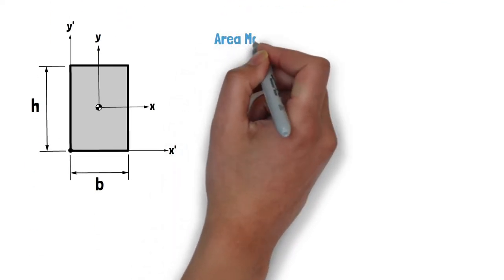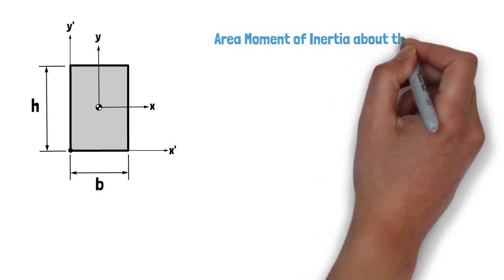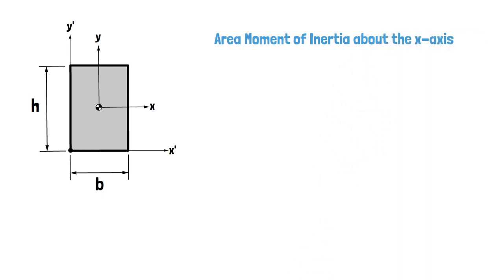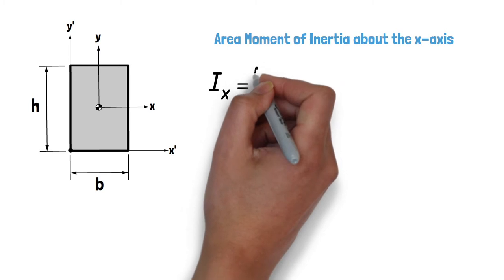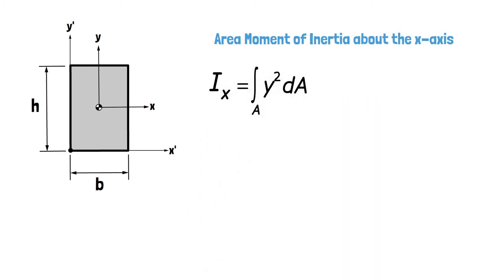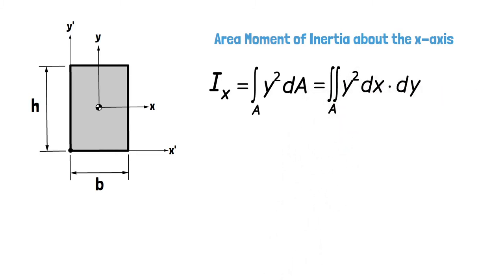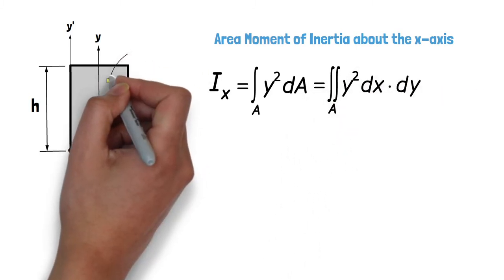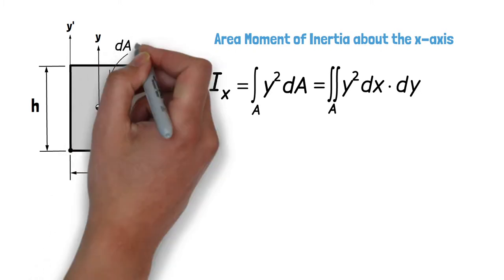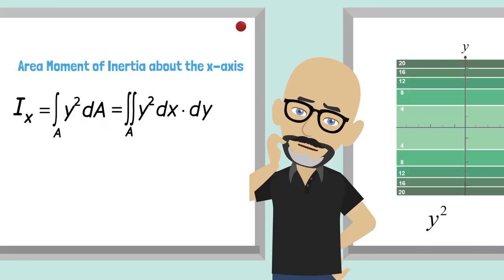Let's start with looking at calculating the area moment of inertia about the centroidal x-axis. By definition, Ix is equal to the integral of y squared dA. As we saw earlier, this is technically a double integral, as a standard area element will have an infinitesimal width dx and an infinitesimal height dy.